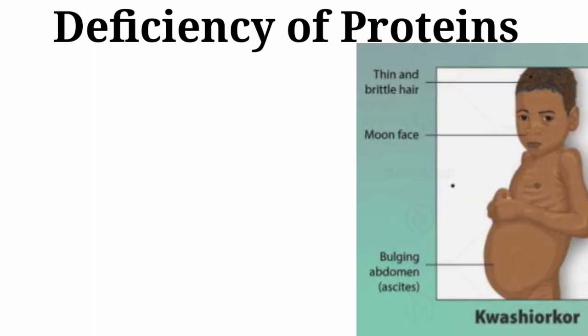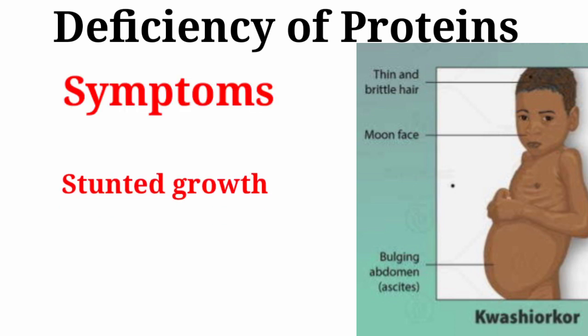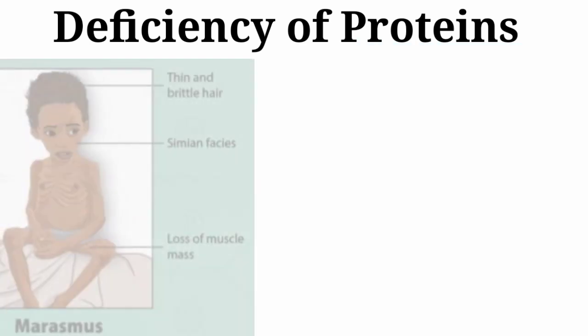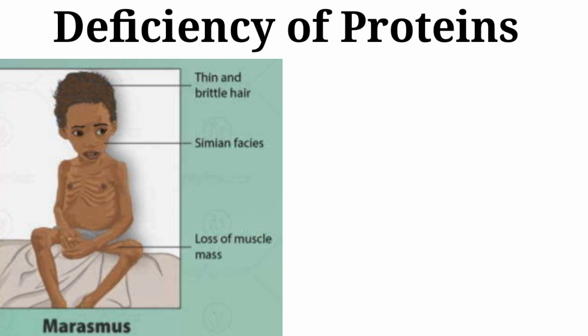Deficiency of protein leads to kwashiorkor in many children. A child suffering from kwashiorkor has the following symptoms: stunted growth, a large pot-like belly, swelling of face, discoloration of hair, skin diseases, and many more.